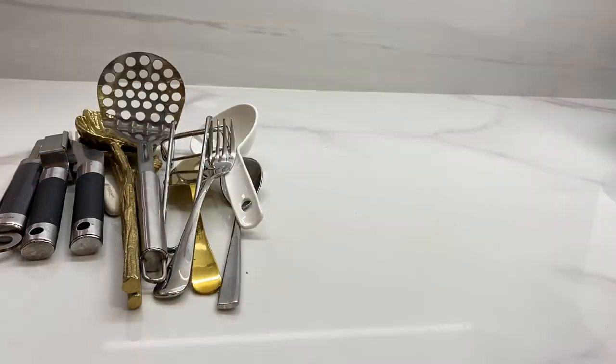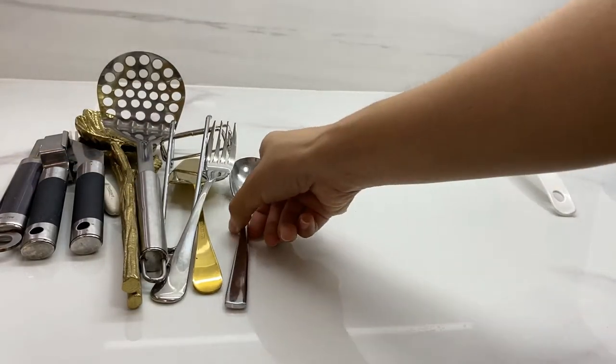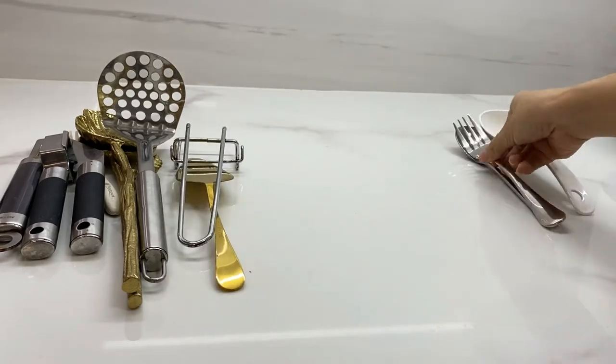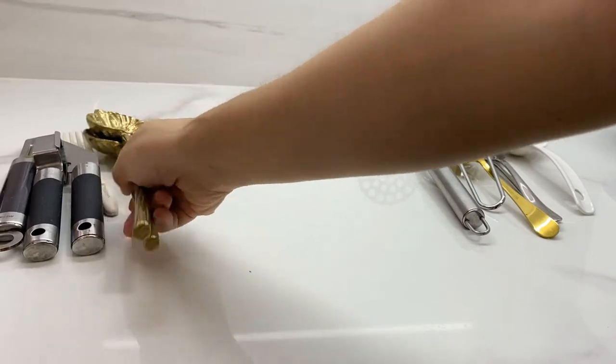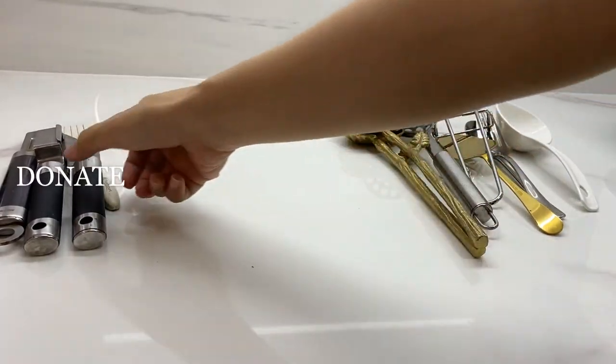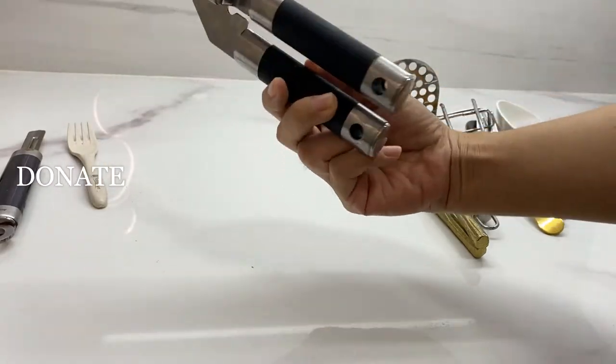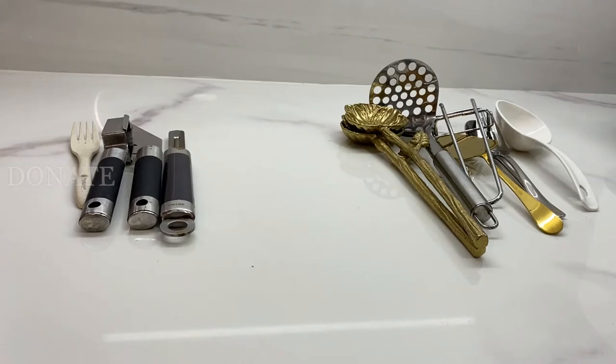The second step in organizing your kitchen drawers is to declutter. Let go of items that you haven't used in months or years. It's better to donate, sell, or simply discard these items rather than to let them sit in your drawer and rust away. Be mindful of the things that you keep. Make sure that you truly need the things that are in your kitchen.